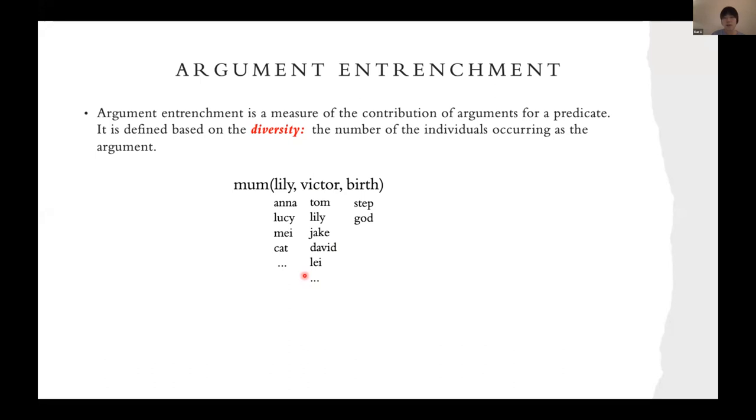In this case, I think it's consistent with human judgment. We give a score based on how large the set of each argument can be, and that is the argument entrenchment score. In this case, the third argument is the least entrenched one.